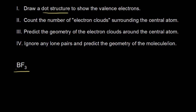For boron trifluoride, I find boron in the periodic table. It's in group three, so it has three valence electrons. Fluorine is in group seven, so it has seven valence electrons, and I have three of them. Seven times three gives me 21, and 21 plus three gives me 24 valence electrons that we need to account for in our dot structure.